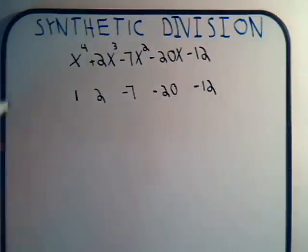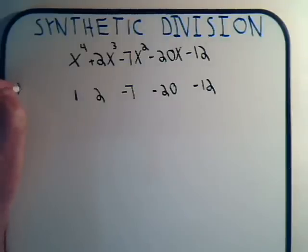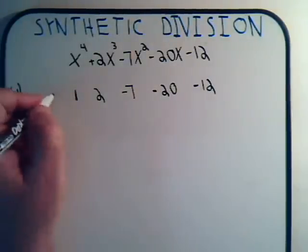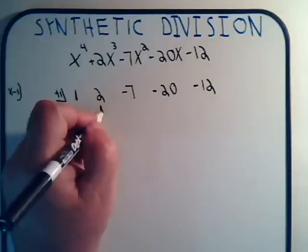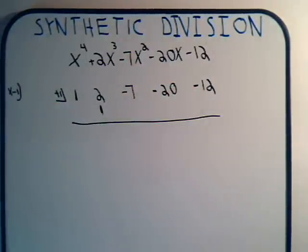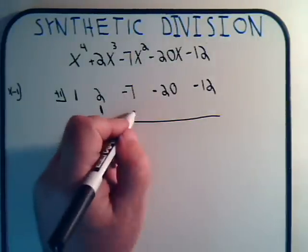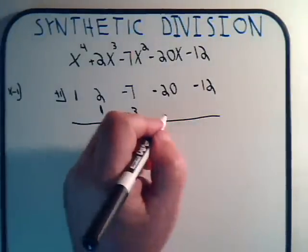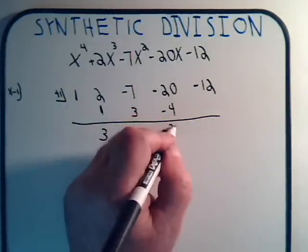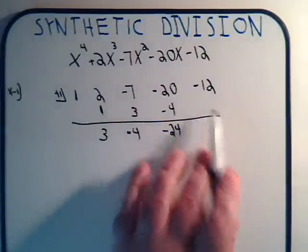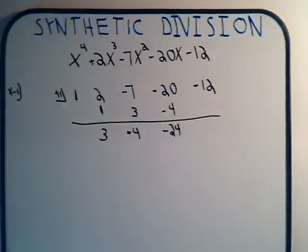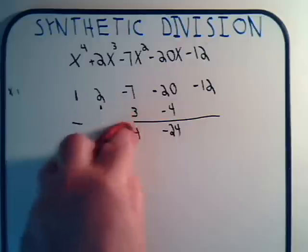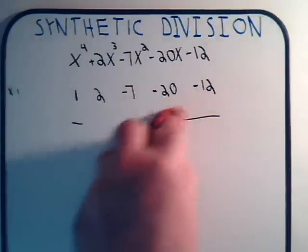Would x minus 1 be a factor? We write down plus 1 here and plus 1 underneath. Adding and multiplying: this would be 3, and 3 times 1 is 3. This would be minus 4, times 1 is minus 4. This would be minus 24, multiply by 1 — that's not going to give plus 12. So we know there's going to be a remainder. We can eliminate x minus 1.